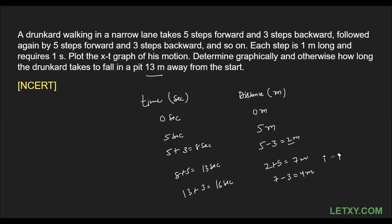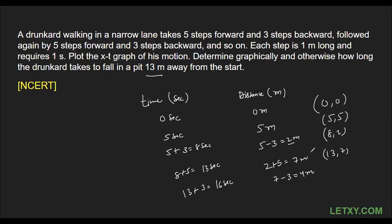Let me write down the coordinates so we can plot them on the graph. The coordinates so far are: (0, 0), (5, 5), (8, 2), (13, 7), and (16, 4). Remember, the first coordinate represents time since we plot time on the x-axis.